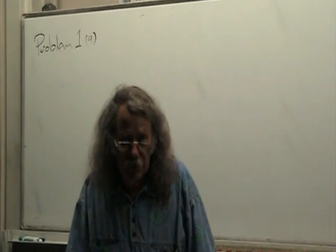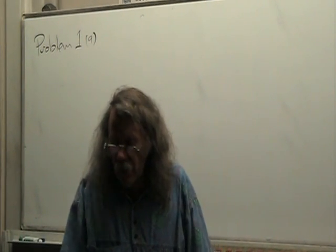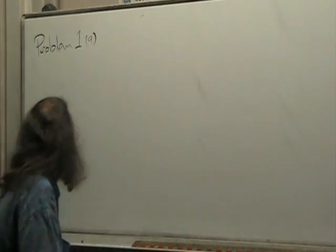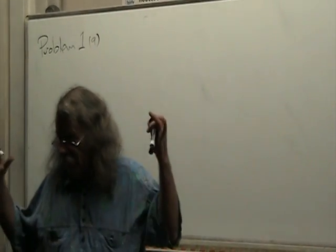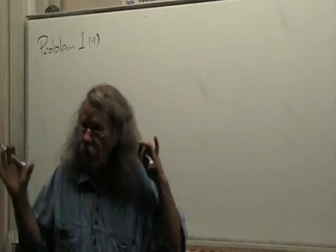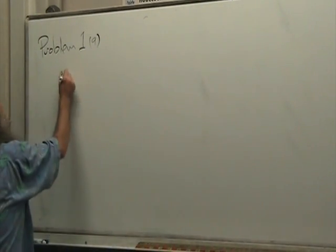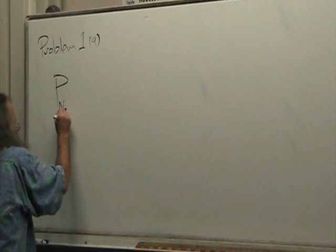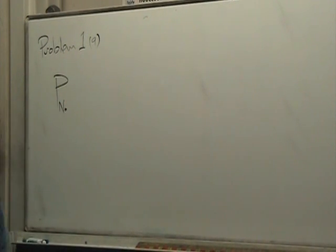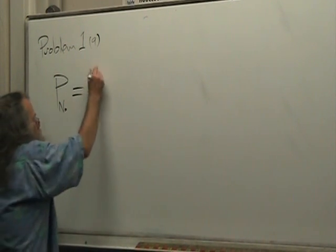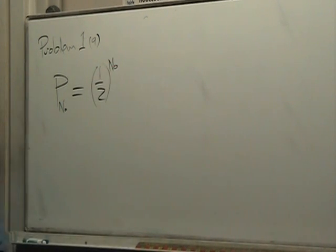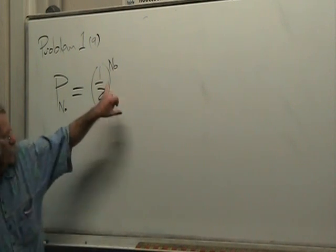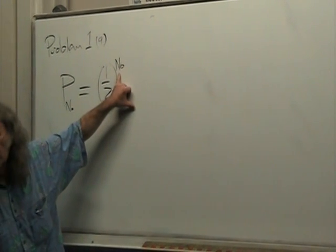So the probability that something is going to be in one side or the other if we divide the volume into two sections is... So the probability for Avogadro's number is equal to one half to the N naught. And the key feature here is that the number of particles occurs in the exponent.